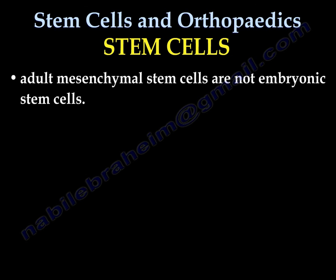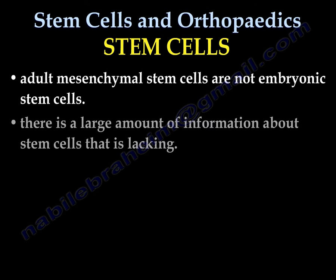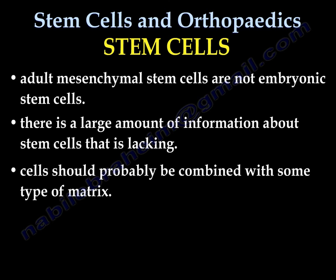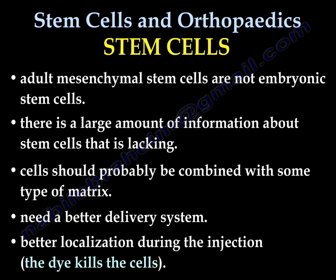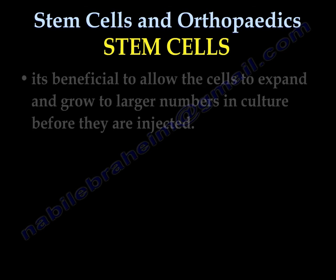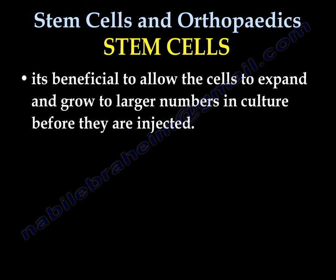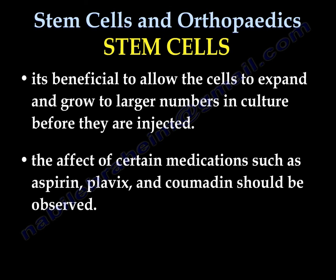Adult mesenchymal stem cells are not embryonic stem cells, and there is still a large amount of information about stem cells that is lacking. Cells should probably be combined with some kind of a matrix, and we need a better delivery system and better localization during injection. The dye may kill the cells. It is probably beneficial to allow the cells to expand and grow to large numbers in cultures before they are injected. They could be available commercially. The effect of certain medications such as Aspirin, Plavix, and Coumadin should be studied carefully.